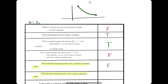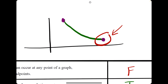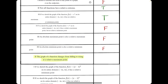The same idea applies to the next statement: an absolute min is also a relative min. On this graph, the absolute min is not a relative min because there's no change from decreasing to increasing. So this statement is also false.